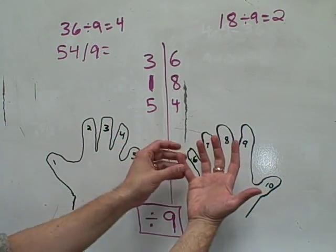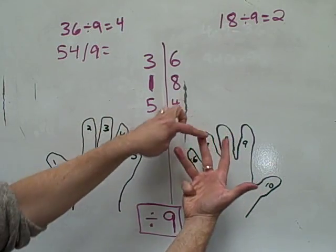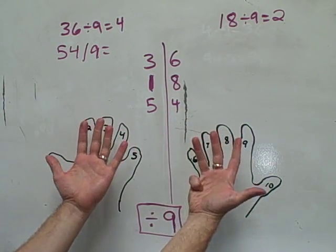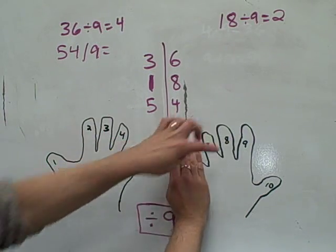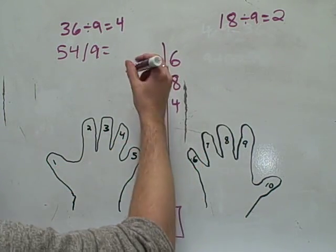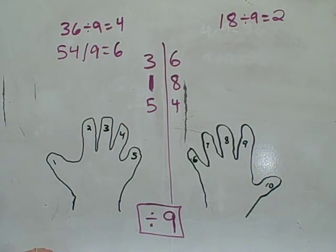30, 40, 50... 50, 1, 2, 3, 4. Which finger did we put down? That's right. 54. We put the sixth finger down. So 54 divided by 9 is 6.